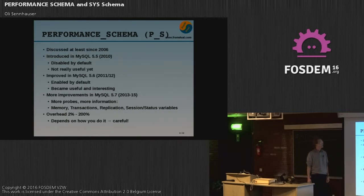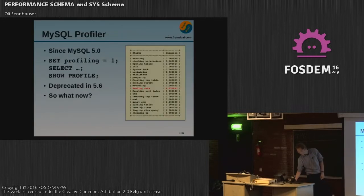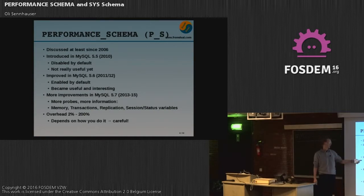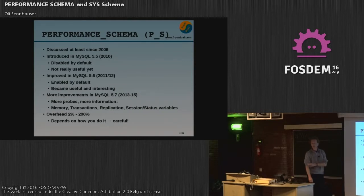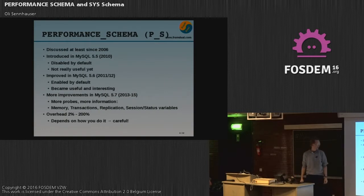The performance schema was first discussed in 2006. It was introduced in MySQL 5.5 in 2010, disabled by default — it had some reason for that. And it was not really useful because it provided limited information. Then in MySQL 5.6 it was significantly improved, around 2011-2012. Since then we have the performance schema. In MySQL 5.6 they enabled it by default, and now it really became useful and interesting. MySQL 5.7, which is the current release from 2013 to 2015, brought more improvements, more probes, more information. Now we have even memory probes. We can look at transactions, replication, session status, variables, and so on.